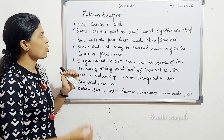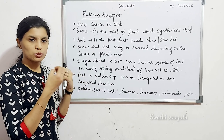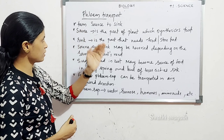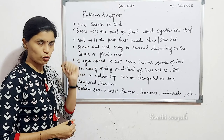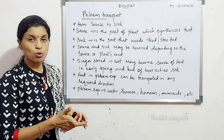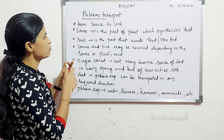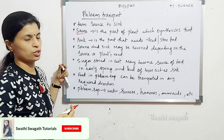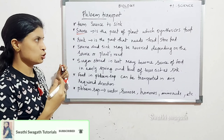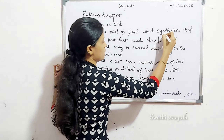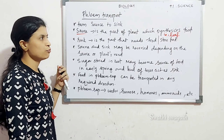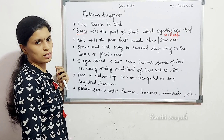Phloem transport occurs from source to sink. Two terms are the source and the sink. What do we mean by the term source? Source means it is the part of the plant which synthesizes food. The leaf is the main source — it is the part which synthesizes food.